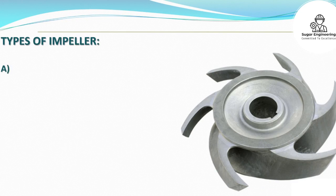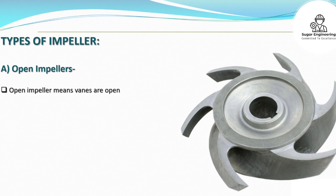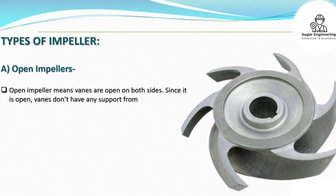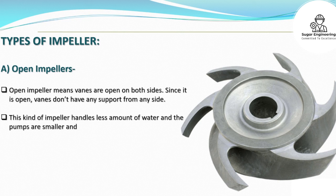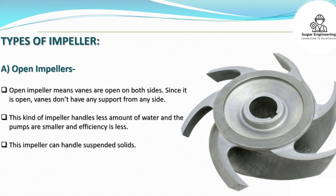Types of impeller — A. Open impellers: In an open impeller, the vanes are open on both sides. Since it is open, the vanes don't have any support from either side. This kind of impeller handles a smaller amount of water; the pumps are smaller and efficiency is lower. However, this impeller can handle suspended solids.